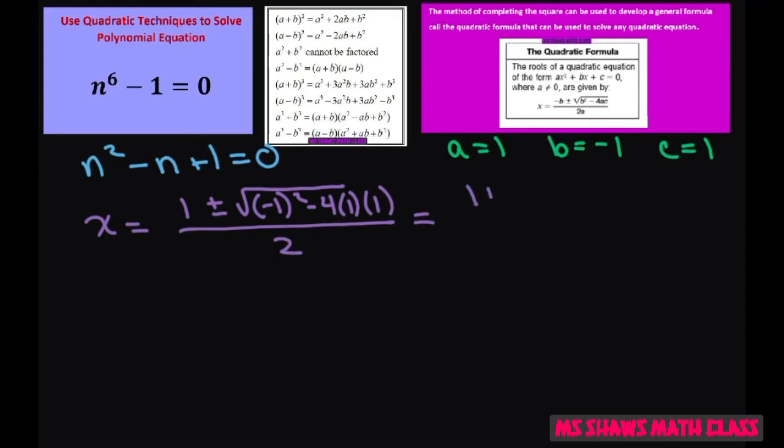So this will give you 1 plus or minus square root negative 3 divided by 2, which equals 1 plus or minus i square root of 3 divided by 2.